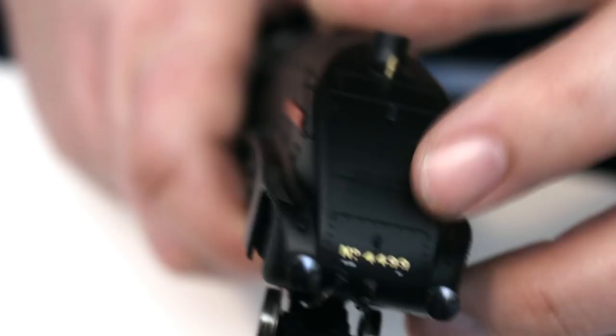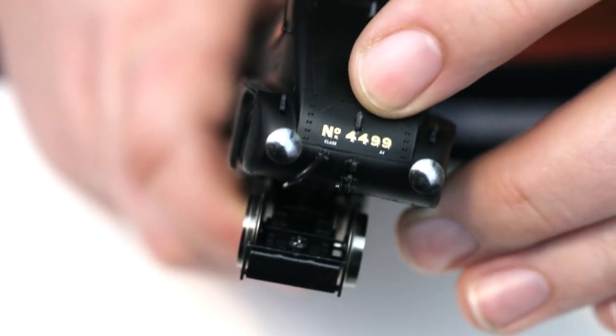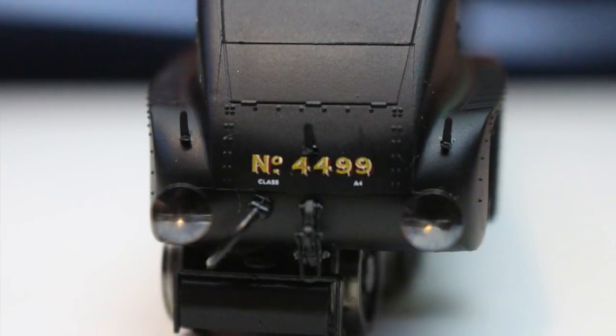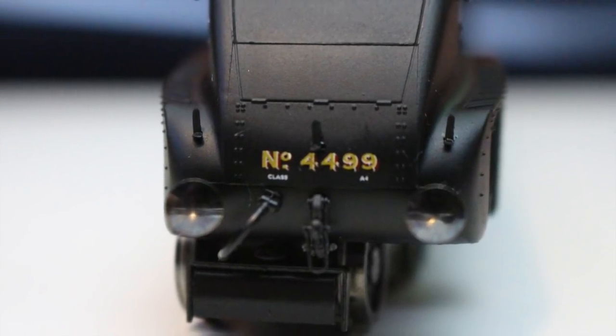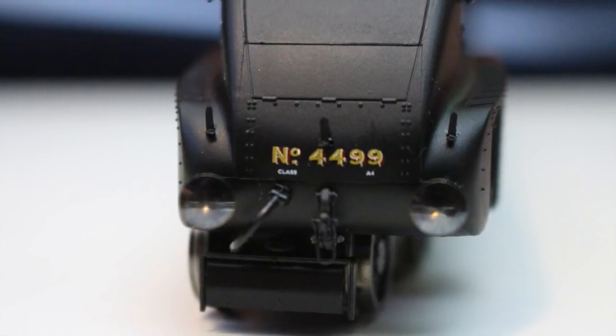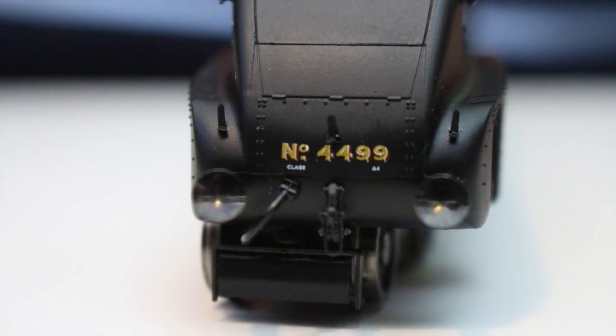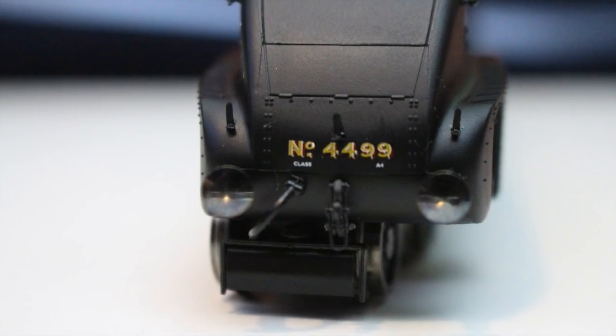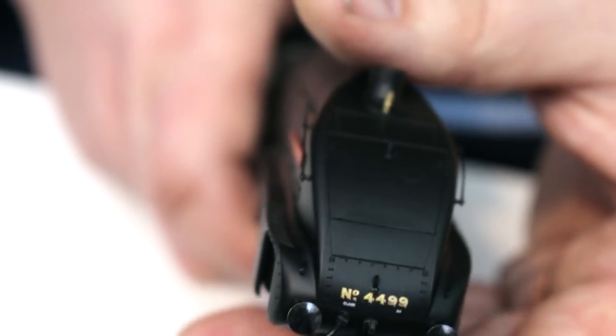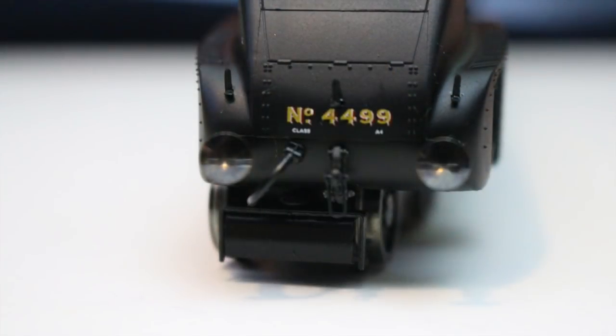So its front form is true to LNER prototypical practice and we've got the running number tampo printed on the front buffer beam and we actually get the shading highlights and lowlights and the serif effect as well on this unlike the cab side numbers and it's really nice to see and it's been superbly realised by Hornby.